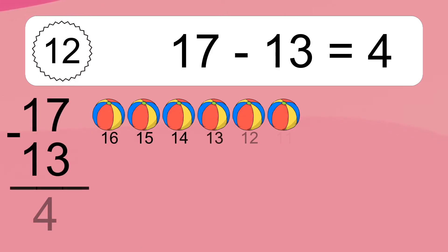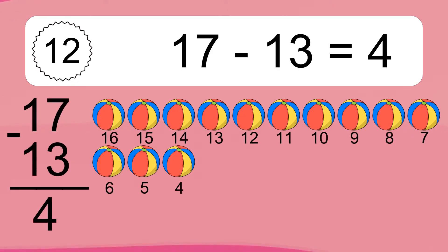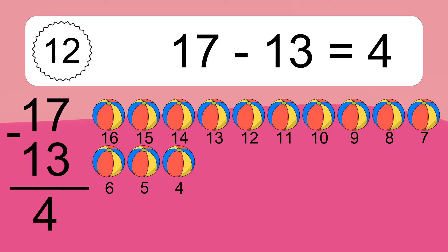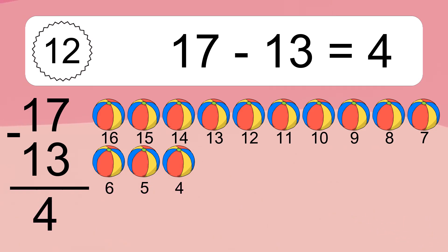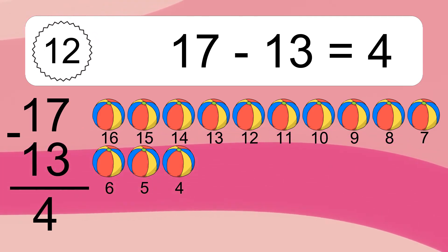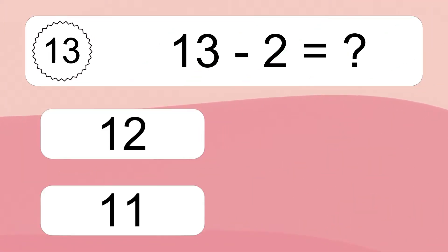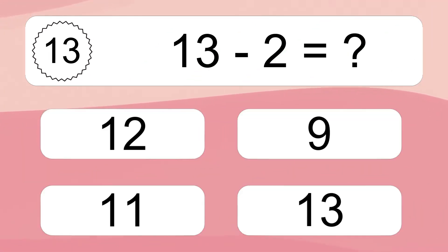17 minus 13 equals what? 17 minus 13 equals 4. Let's count it: 16, 15, 14, 13, 12, 11, 10, 9, 8, 7, 6, 5, 4.